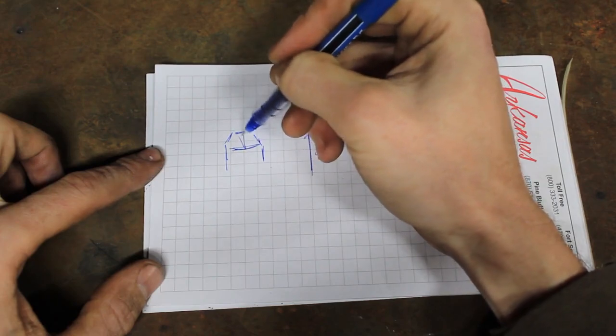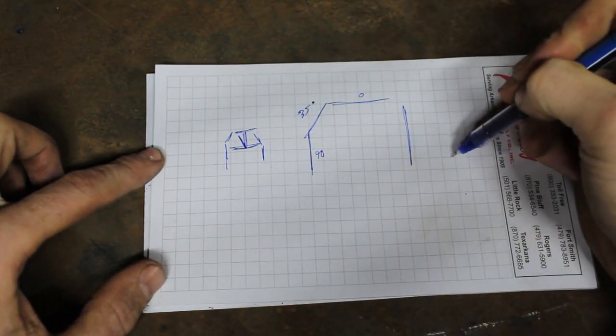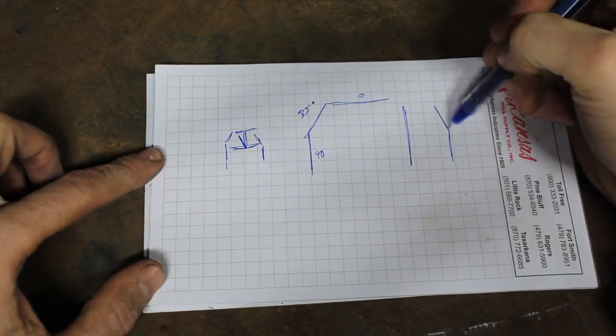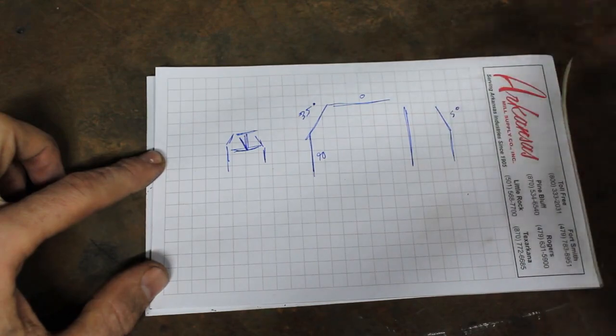here's your two A pillars, you have your little V in the middle. So this tube now looks like this. It's leaned in five degrees looking head-on.